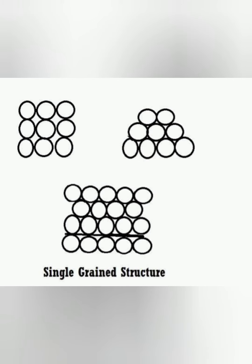Single grained structure. From the figure we observe the soil particles pattern. This structure is majorly observed in gravel and coarse sand. These are cohesionless soils.